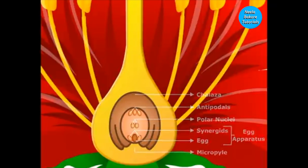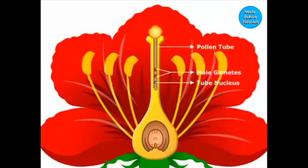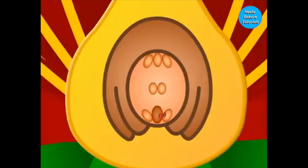The pollen tube emerges from the germ pore. The haploid generative cell divides to form two male gametes. The pollen tube enters the embryo sac through the micropyle — it enters through the degenerating synergid, or between the egg and the synergid. The first male gamete fuses with the egg to form a diploid zygote. This process is known as fertilization.